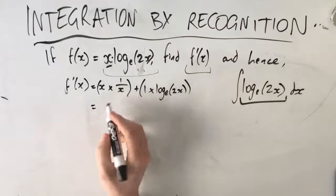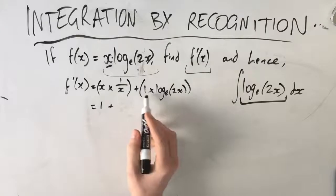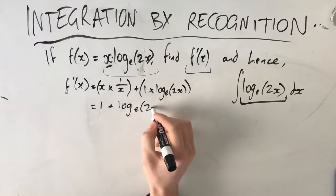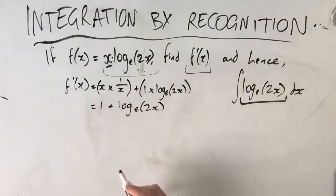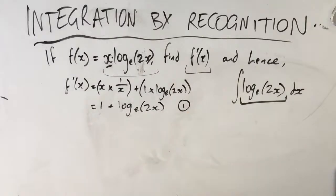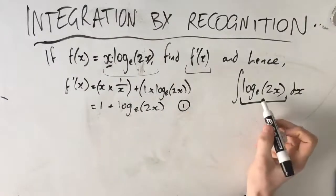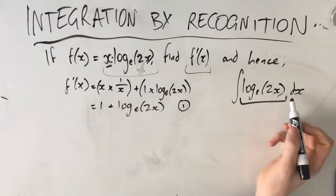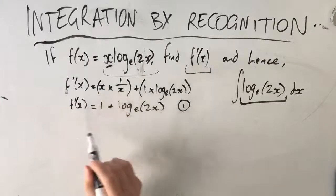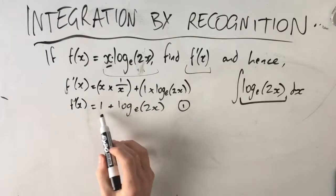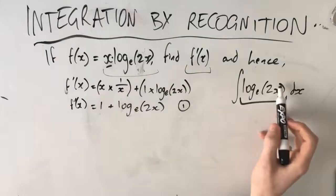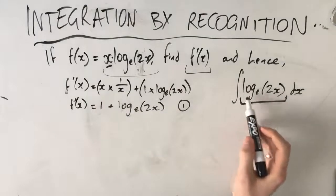We get x/x which is 1, so f'(x) equals 1 plus log_e(2x). And if this were an end-of-year exam, that would already be one mark right there. So hence find the antiderivative of log_e(2x): we can see that f'(x) equals 1 plus log_e(2x), and we have that log_e(2x) in our target integral as well.